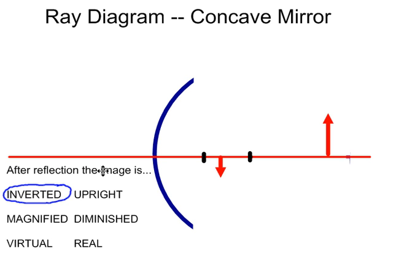Also, the next thing we look at is whether it's larger or smaller. It is diminished - you can see it's smaller than the original red line.